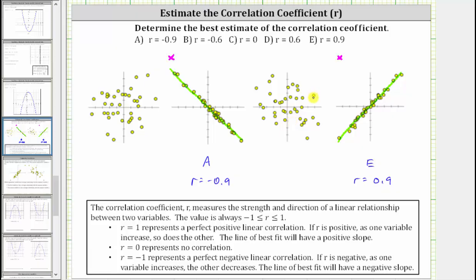Now let's take a look at the remaining two scatterplots. Notice the points are more scattered. For the first scatterplot, if we were to sketch a line of best fit, it might look something like this. Notice how the slope of this line is positive, and therefore r is going to be positive, but because the points are not as close to the line of best fit, r is not going to be as close to positive one. So looking at the choices, let's select d: r equals positive 0.6.